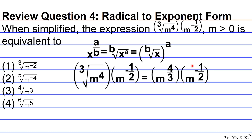We apply the law of exponents: when multiplying terms with the same base, we add the exponents. To add these rational exponents — fractions with integers in the numerator and denominator — we need to find the least common denominator. The LCD between 2 and 3 is 6.